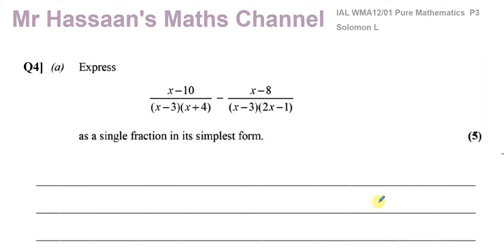This is a question about algebraic fractions. Part A, we have to combine these two fractions into one — subtract these two fractions from each other and express the answer as a single fraction in its simplest form. This question is number five from the end-of-topic worksheet I gave to my students, though it's number four from the Solomon L paper — that's why it says four here.